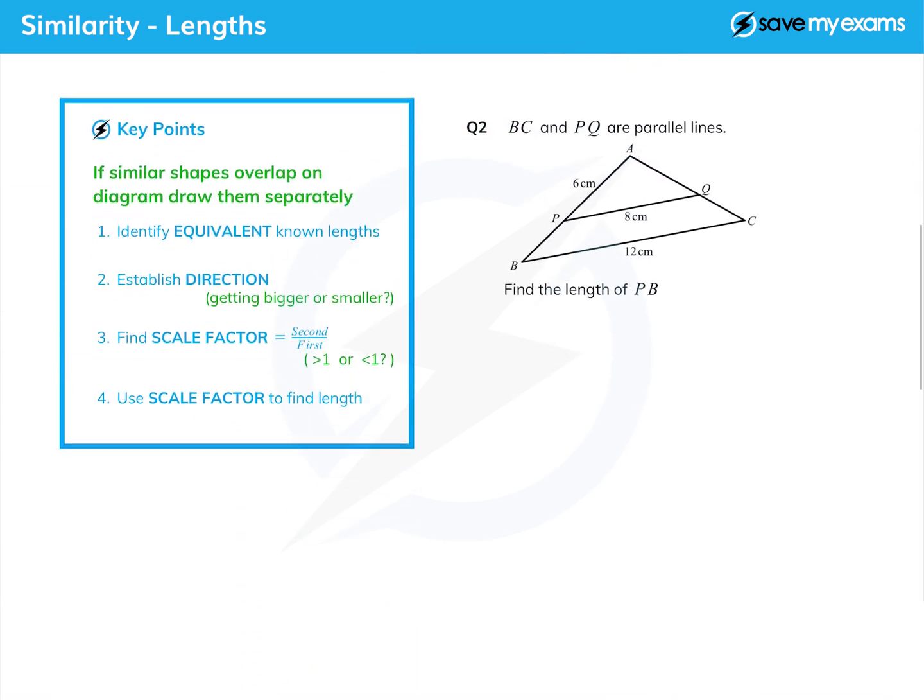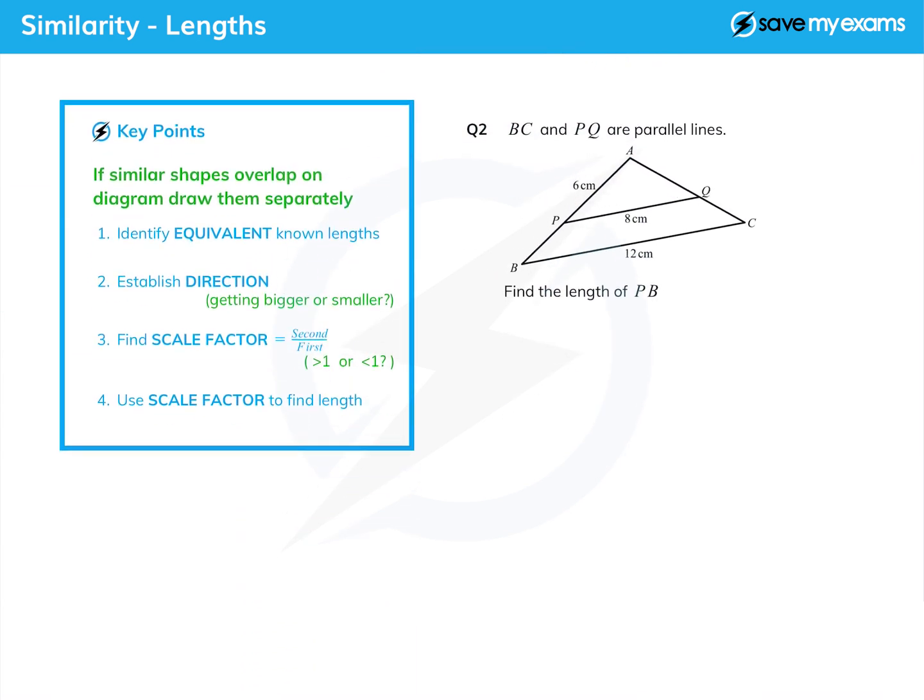Let's look at a slightly harder question. It's harder to start with because there is an overlap between the shapes and we are not even told that there are similar shapes here. But because these two lines are parallel, that means that this angle and this angle are the same because they're corresponding angles, as are this angle and this angle, and obviously the other angle is common. So these two triangles are genuinely similar - triangle APQ and ABC.